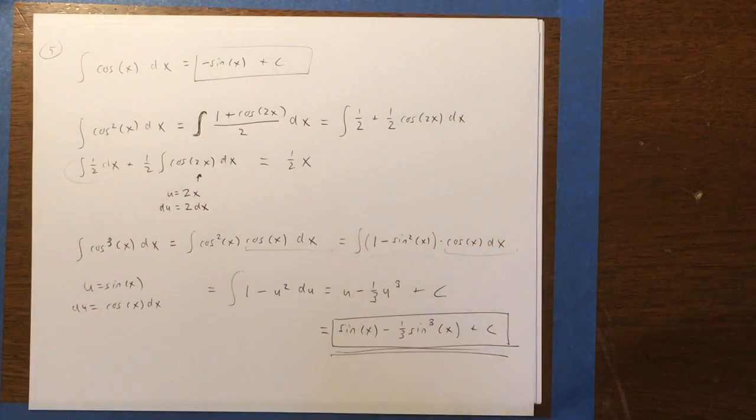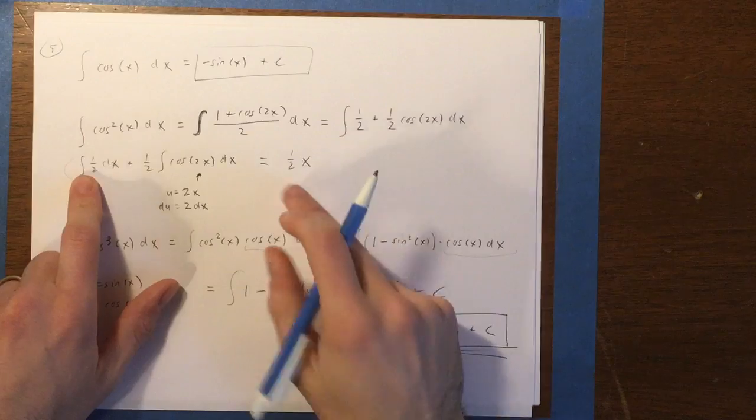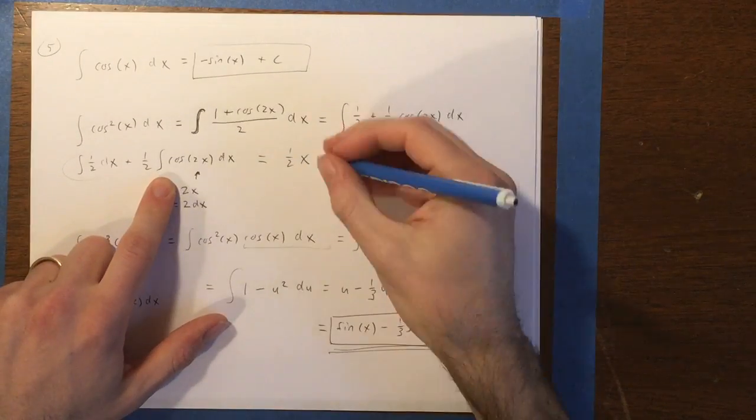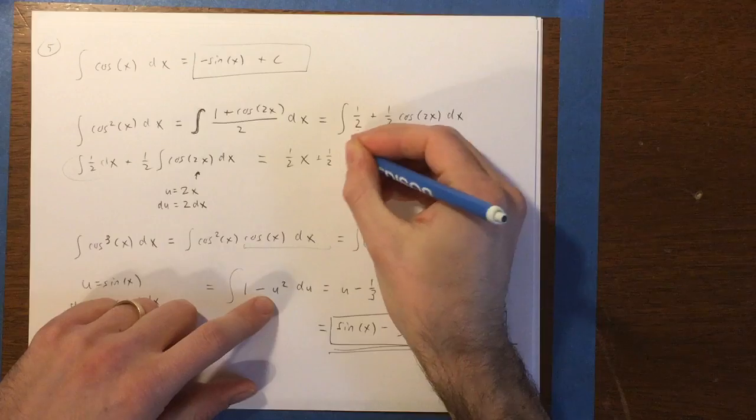Okay, so let's just finish up this example. We had 1 half x from the first term. From the second term, we are trying to do an integral of the cosine of 2x.